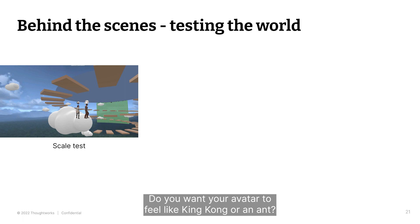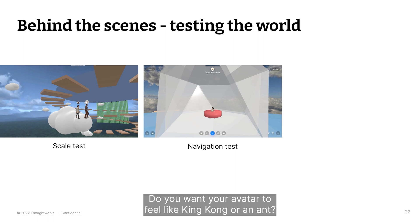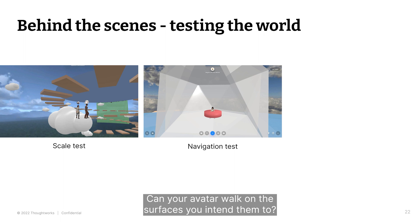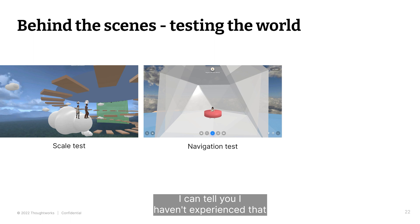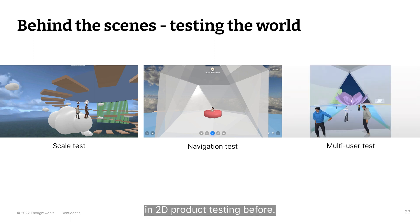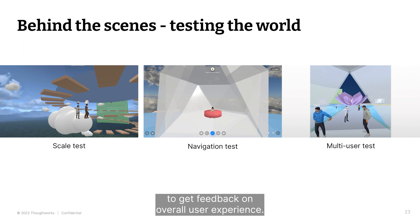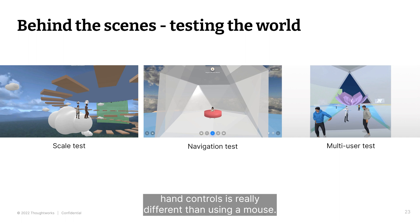How big should your world be in relation to your avatar? Do you want your avatar to feel like King Kong or an ant? Another focus point to test is ease of navigation. Can your avatar walk on the surfaces you intend them to? I got stuck during one of my tests — literally. My avatar was stuck in the middle of a red cushion. I can tell you I haven't experienced that in 2D product testing before. I also shared drafts of my world with others to get feedback on overall user experience. It's good to test in VR too if you have a headset, since navigation using hand controls is really different than using a mouse. Don't worry — I debugged my scene and got myself unstuck.